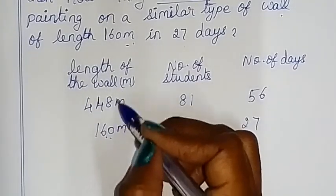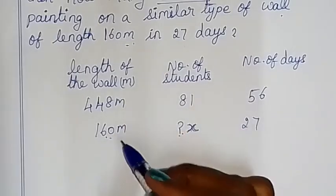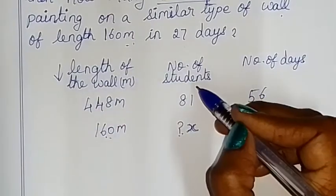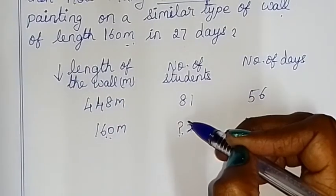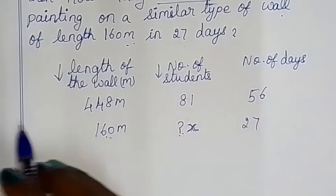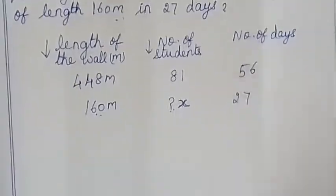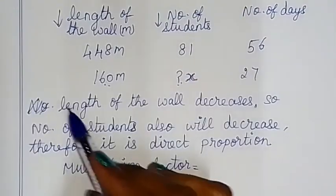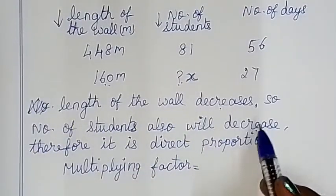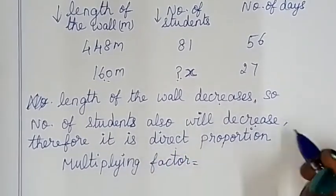Now, the length of the wall is smaller — it is a small length, so the value is small. The number of students will also decrease. This is direct proportion: the length of the wall is small, so the number of students will also decrease. It is direct proportion.